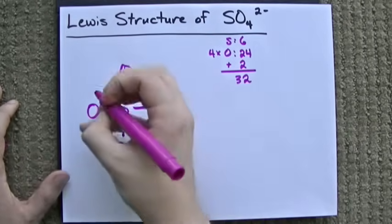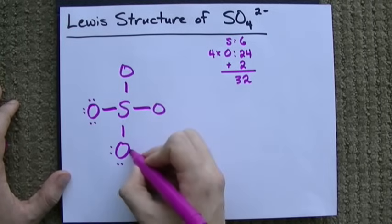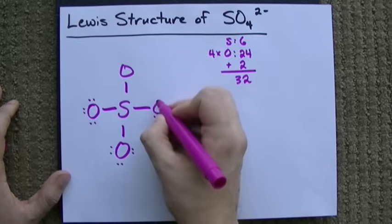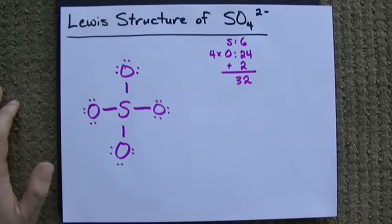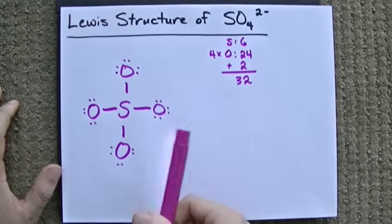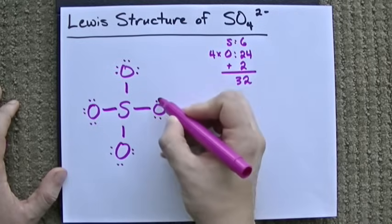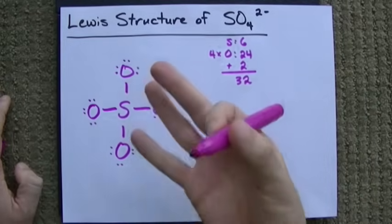Then I fill my outer atoms, 10, 12, 14, 16, 18, 20, 22, 24, 26, 28, 30, 32. Now I've only put 8 electrons on each oxygen because the oxygens have to follow the octet rule.